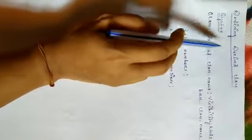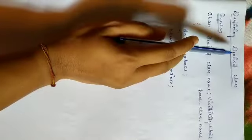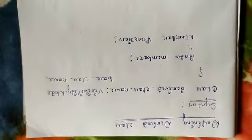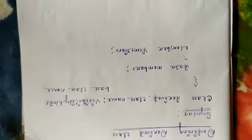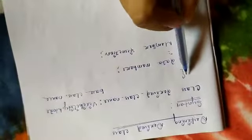Good morning students. Today we will study how to define a derived class. In the previous video I have already told you about inheritance and different types of inheritance. A derived class is also a class, but it may contain some data members or member functions of the base class, and it can also have its own data members and member functions.